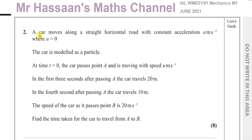This question is about constant acceleration. We have a car moving along a straight horizontal road with constant acceleration A, where A is greater than zero — so it's accelerating, not decelerating. The car is modeled as a particle. At time t equals zero, the car passes point A and is moving with speed U meters per second. In the first three seconds after passing A, the car travels 20 meters. In the fourth second after passing A, the car travels 10 meters.